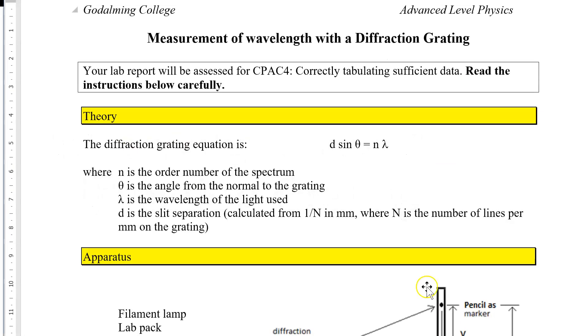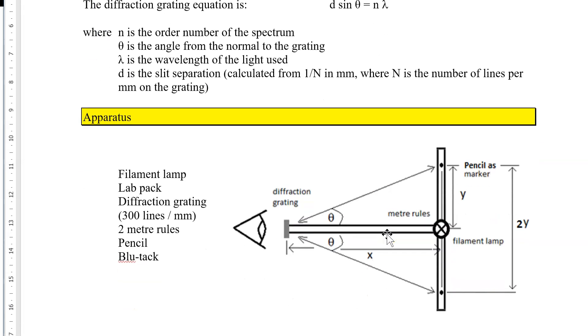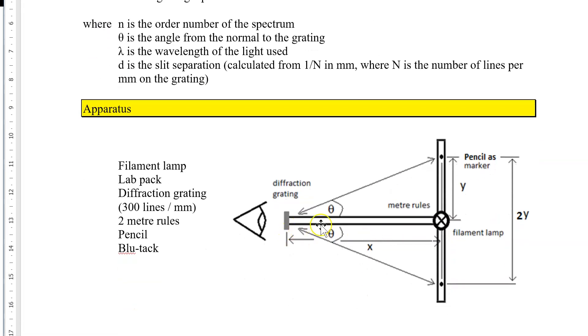Let me go back to the experiment sheet. Here is the setup: one meter ruler this way, one meter ruler this way, so we can measure an angle. We're not going to measure the angle directly. We're going to put a filament lamp there and look at the filament lamp through a diffraction grating. Let's have a quick look at what that looks like when you set it up.